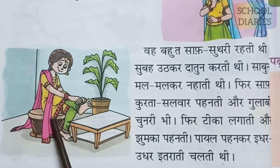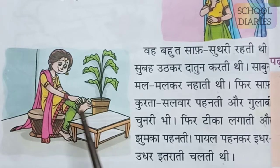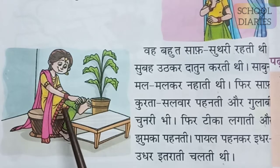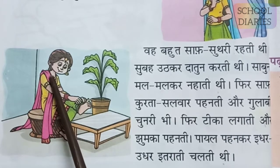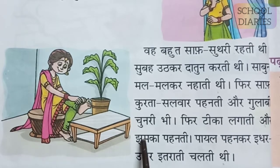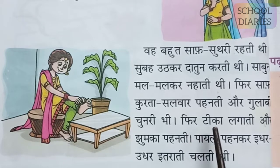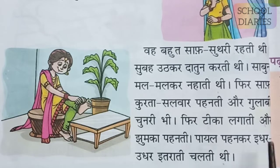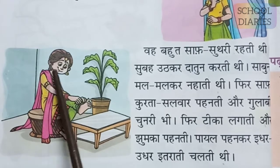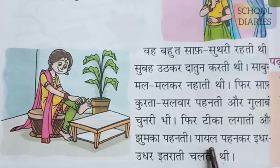Kurta salwar is the ladies' suit — the kurta is the top and the salwar is the bottom, like pants. She wore clean kurta salwar after her bath. Or gulabi chunari bi — gulabi means pink color and chunari means the dupatta that ladies wear with this suit. Fir tika lagati — tika means bindi, so she used to put on the bindi. Jumka pehenti — jumka means earrings, so she used to wear nice big earrings.